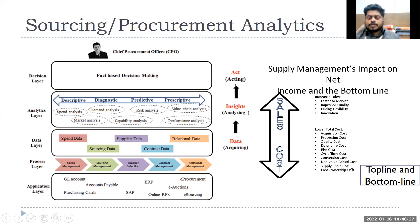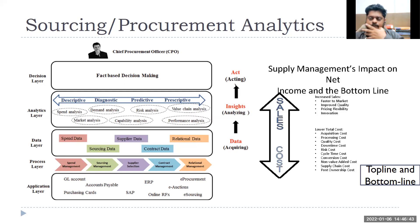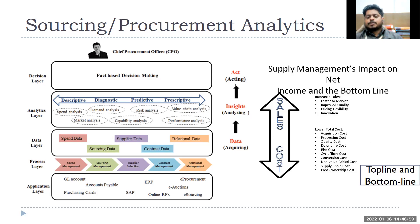Non-value-added cost is where value chain analysis works. Some of you taking managing service operations did value stream analysis. In assembly lines, when assembling certain items, there are value-added and non-value-added activities. Non-value-added activities are basically a cost — just waiting time. If you reduce that, you can produce more.